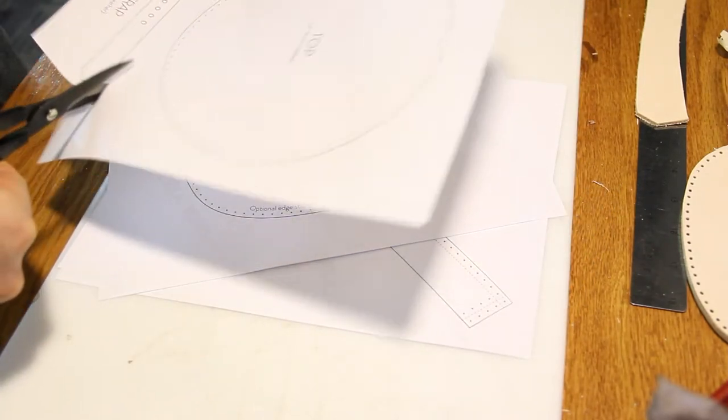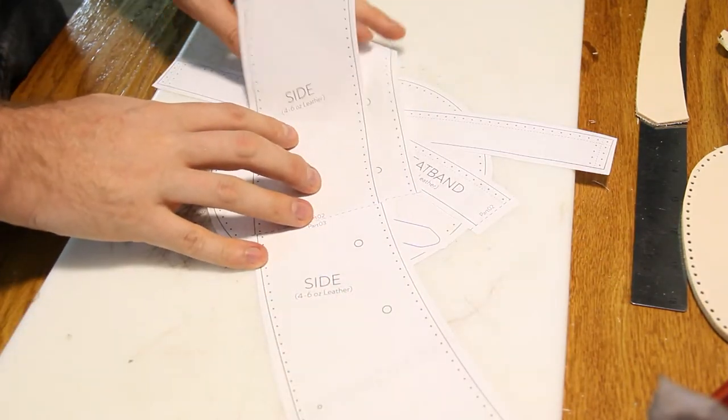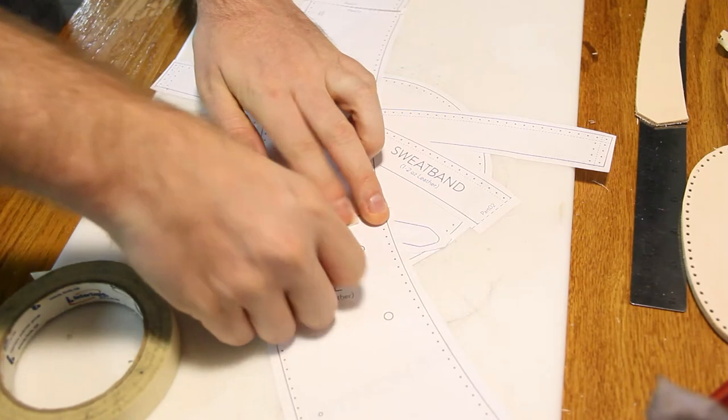First, let's get these pieces cut out. The larger section of the hat is split up into three parts, so tape those three pieces together.